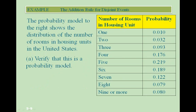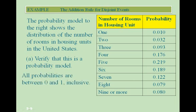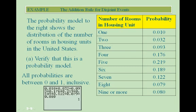Example: the addition rule for disjoint events. A probability model shows the distribution of the number of rooms in housing units in the United States. First, we verify this is a probability model: all values must be between 0 and 1 inclusive, and they must sum to 1. All probabilities are between 0 and 1, and when summed they equal 1, so this is a valid probability model.